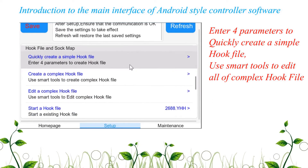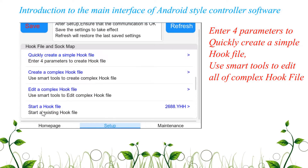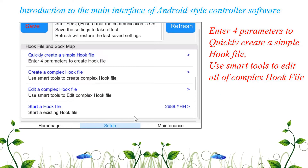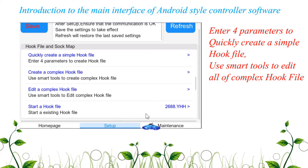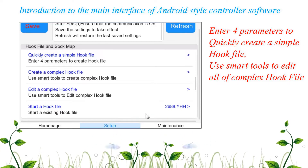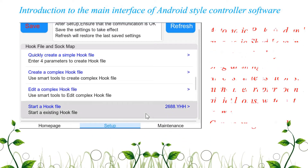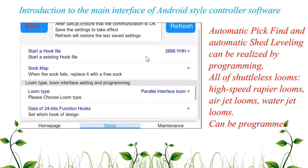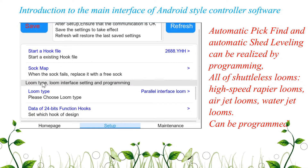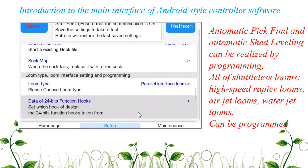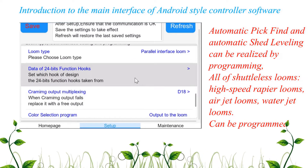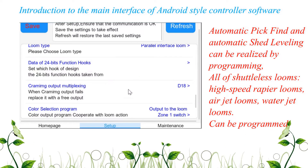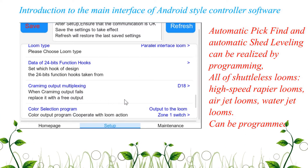Enter parameters to quickly create a simple hook file. Use smart tools to edit all complex hook files. Automatic pick find and automatic shed leveling can be realized by programming. All shadowless looms, high speed rapier looms, air jet looms, and water jet looms can be programmed.